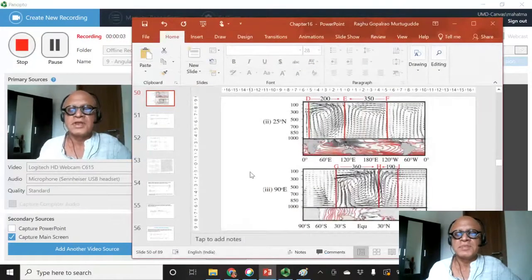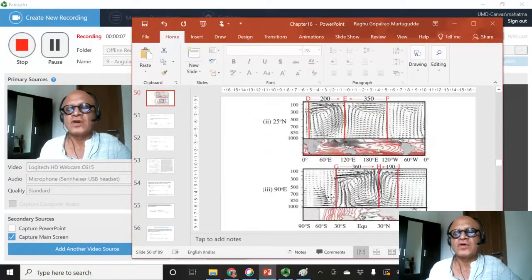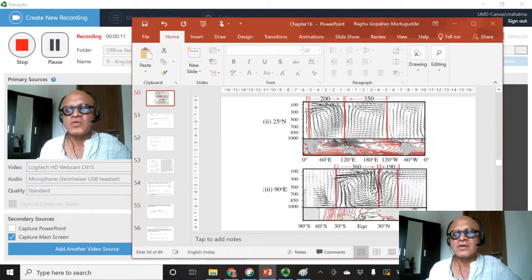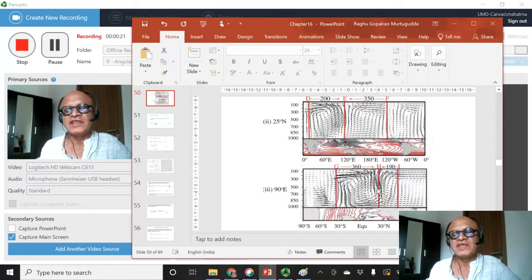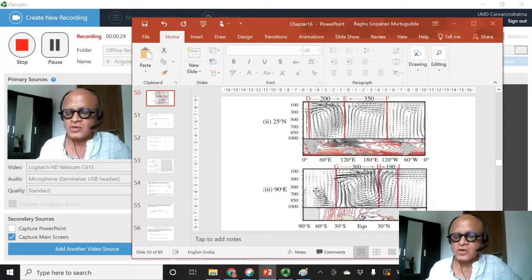Let's repeat this to make sure we understood. We are looking for the amount of heating that is required when the heating is off the equator to drive thermally direct meridional circulation. Basically, what level of heating is required to drive vertical motion over the heating and the meridional circulation that goes with it.